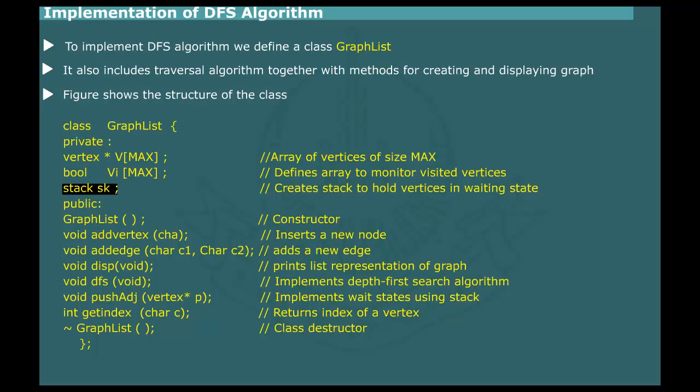The class methods are as follows. AddVertex inserts a new vertex into the graph. AddEdge creates a new edge between a given pair of vertices. Disp prints a linked list representation of graph. DFS implements the Depth-first search algorithm. Push ADJ handles vertices which are in weight state. GetIndex is an auxiliary function to obtain index of a given vertex.